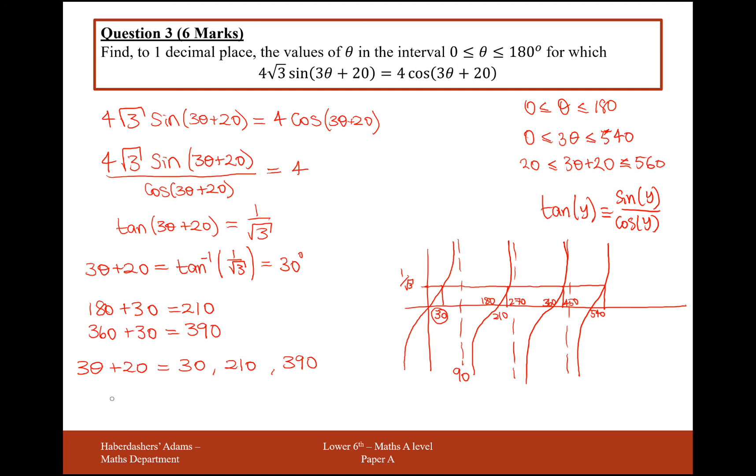What I need to do is I need to work out now the value of 3θ. So taking away 20 from all of these answers and I get 10, 190, and 370. And then to divide and get theta, I need to now divide by 3. And quickly getting my calculator out, I've got 3.3 here.